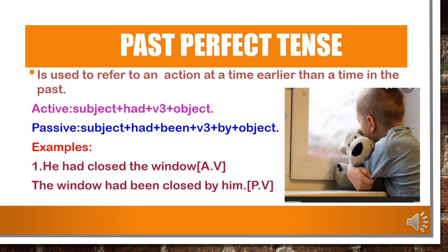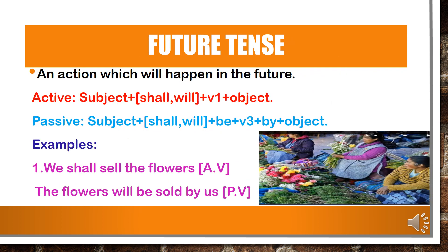Simple future tense describes an action which will happen in the future. In active voice: subject plus shall/will plus V1 plus object. In passive voice: subject plus shall/will plus 'be' plus V3 plus 'by' plus object. Example: 'We shall sell the floss' becomes 'The floss will be sold by us.' 'Sell' changes to 'sold' (V3), and 'we' changes to 'us' as the object.